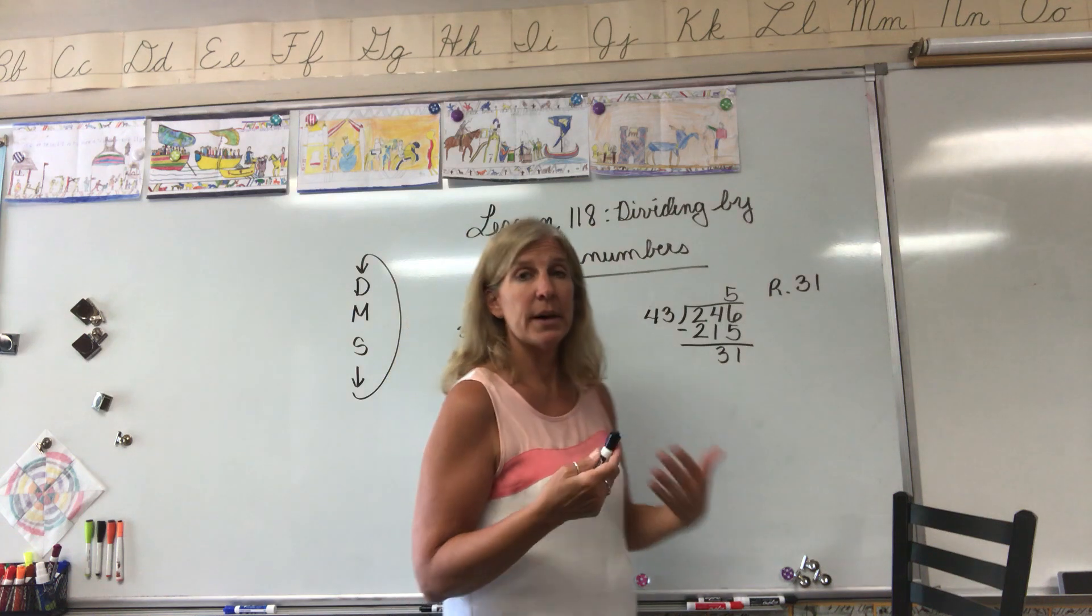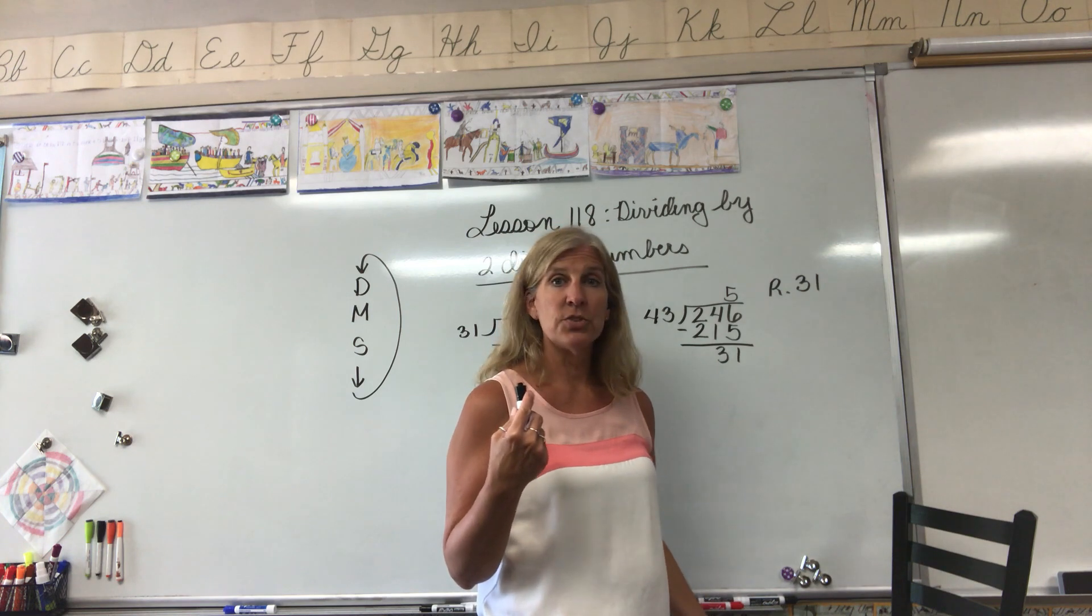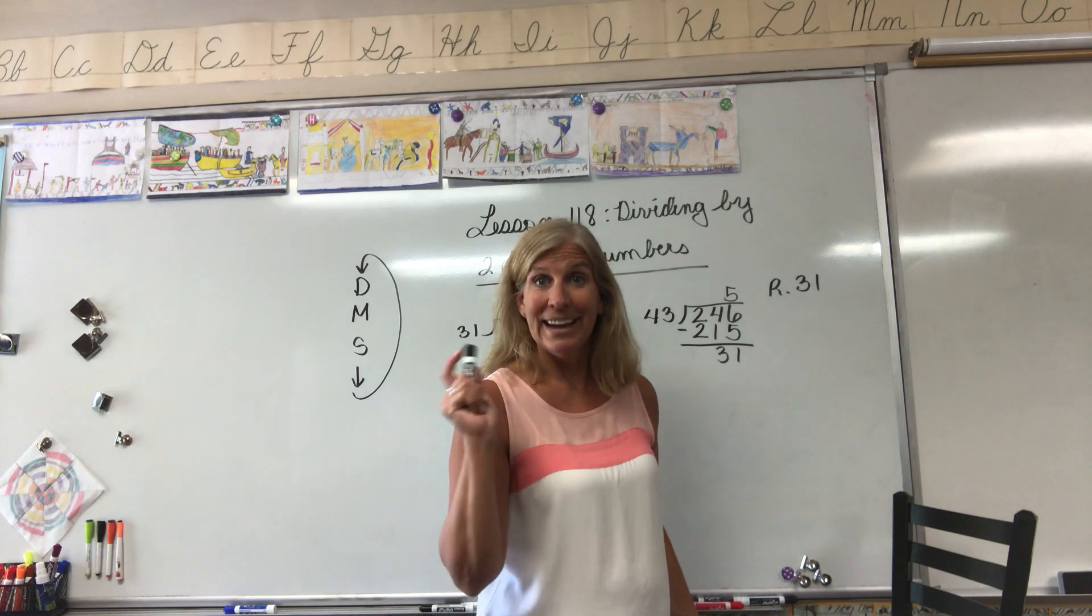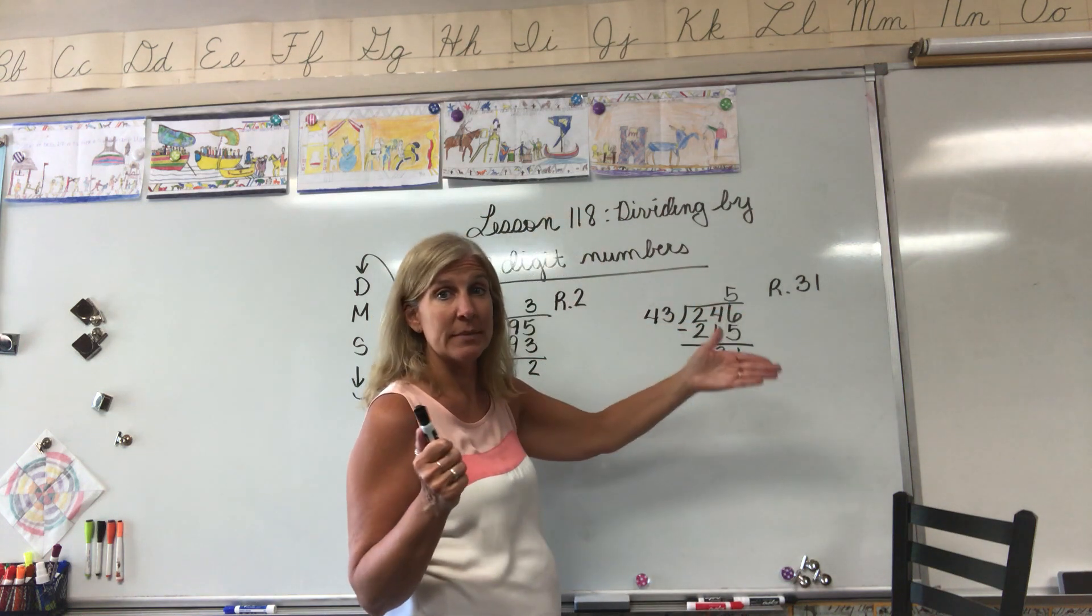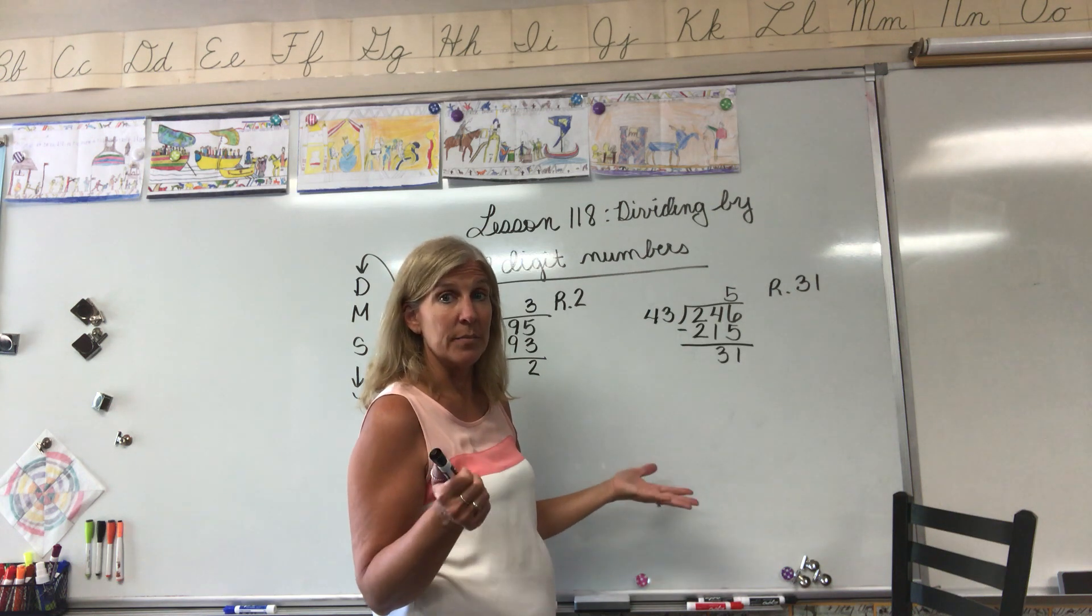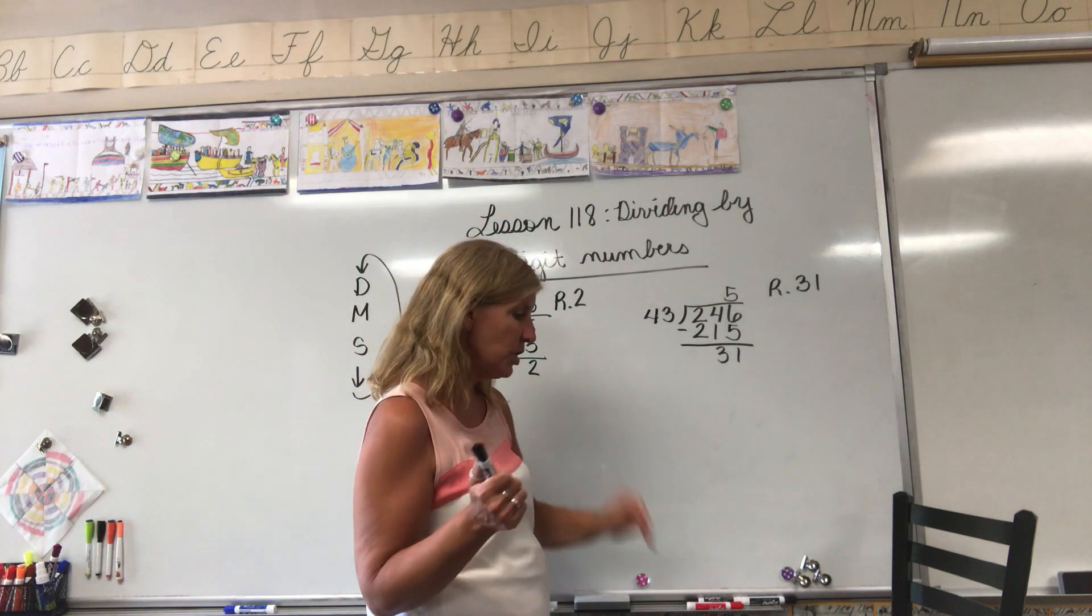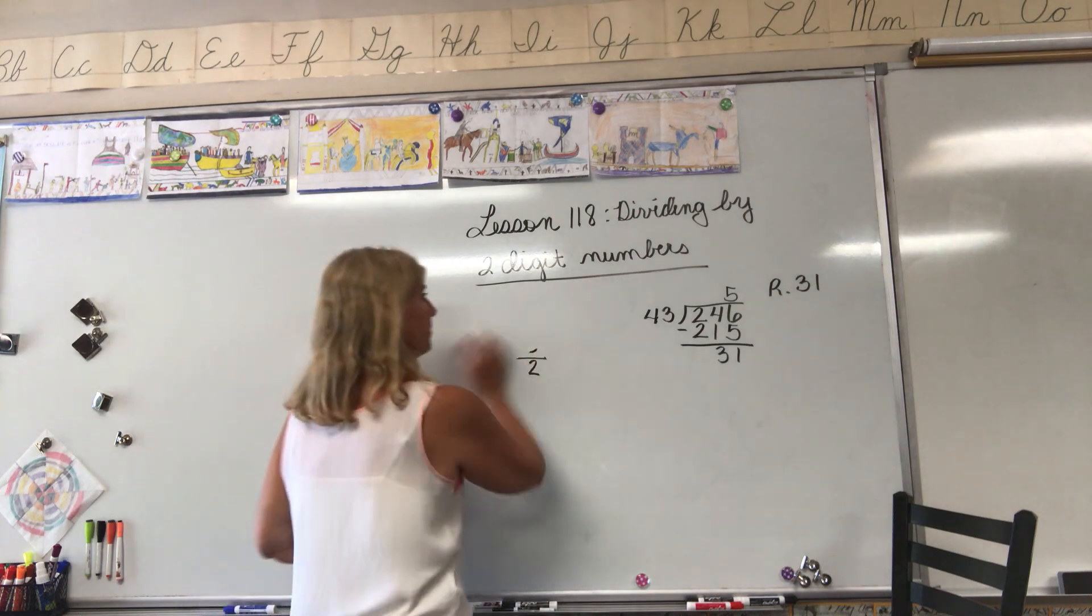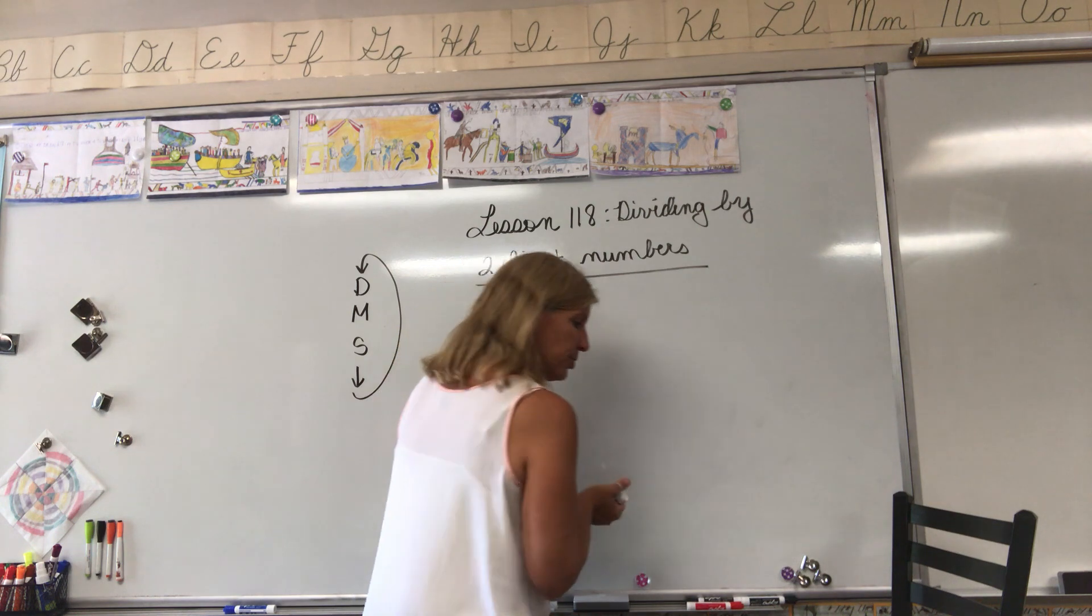Dividing by two digit or larger numbers does require a little bit of a strategy I call guess and check. Guess gives you a good place to start when we're dividing, but sometimes we choose a number that is too big or too small and we end up with numbers that are either too big or too small.